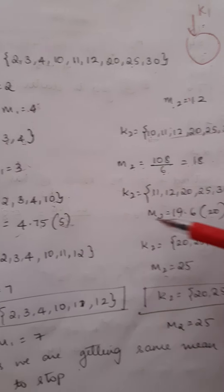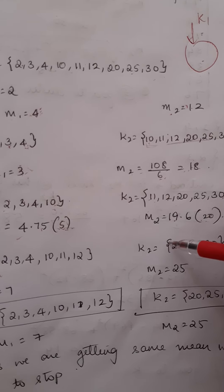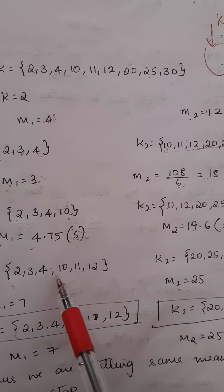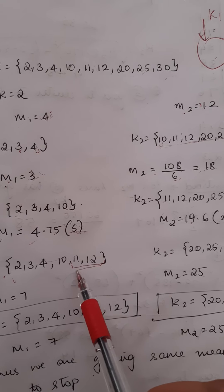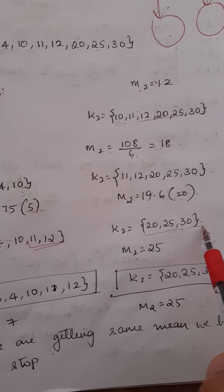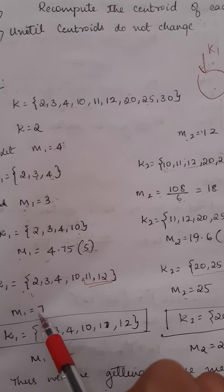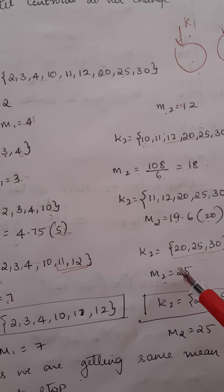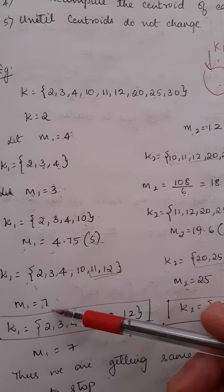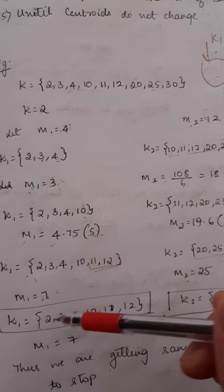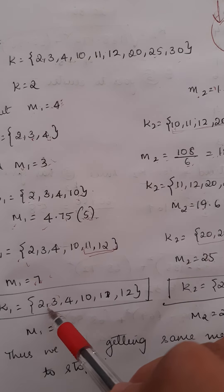Again, I check whether these numbers are closer to 5 or closer to 20. If closer to 5, they go into the first cluster; if closer to 20, into the second cluster. Repeating this operation, 11 and 12 become new additions to the first cluster. The second cluster now has only 20, 25, and 30. Computing the mean again, I get centroid 7 for K1 and 25 for K2.